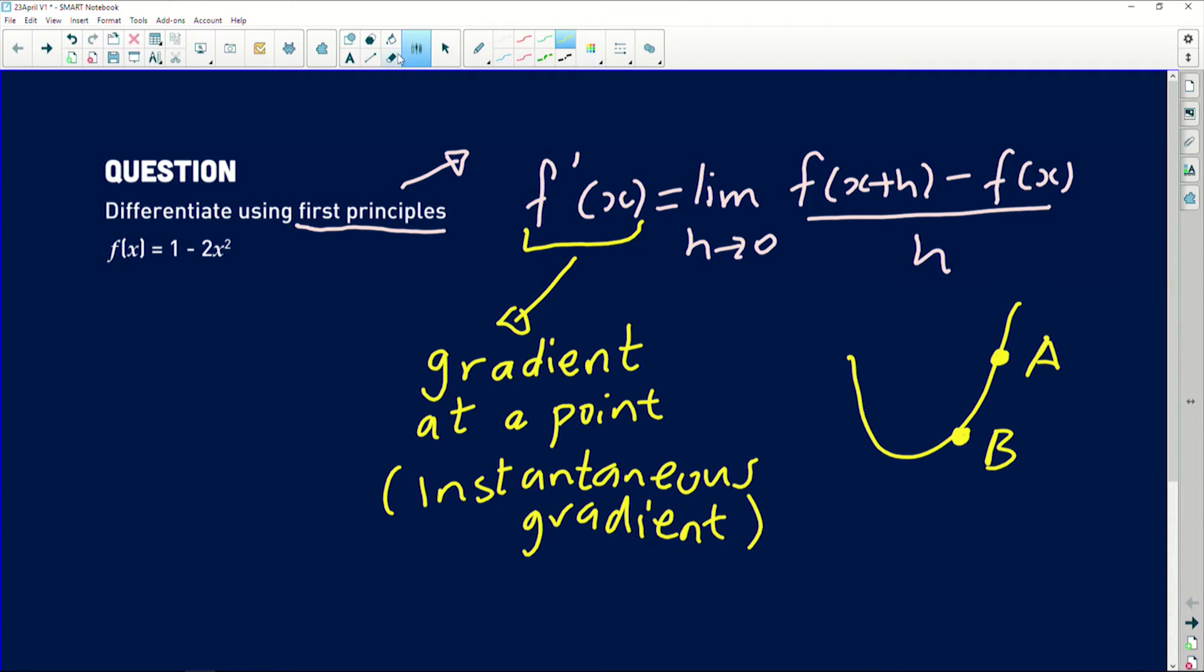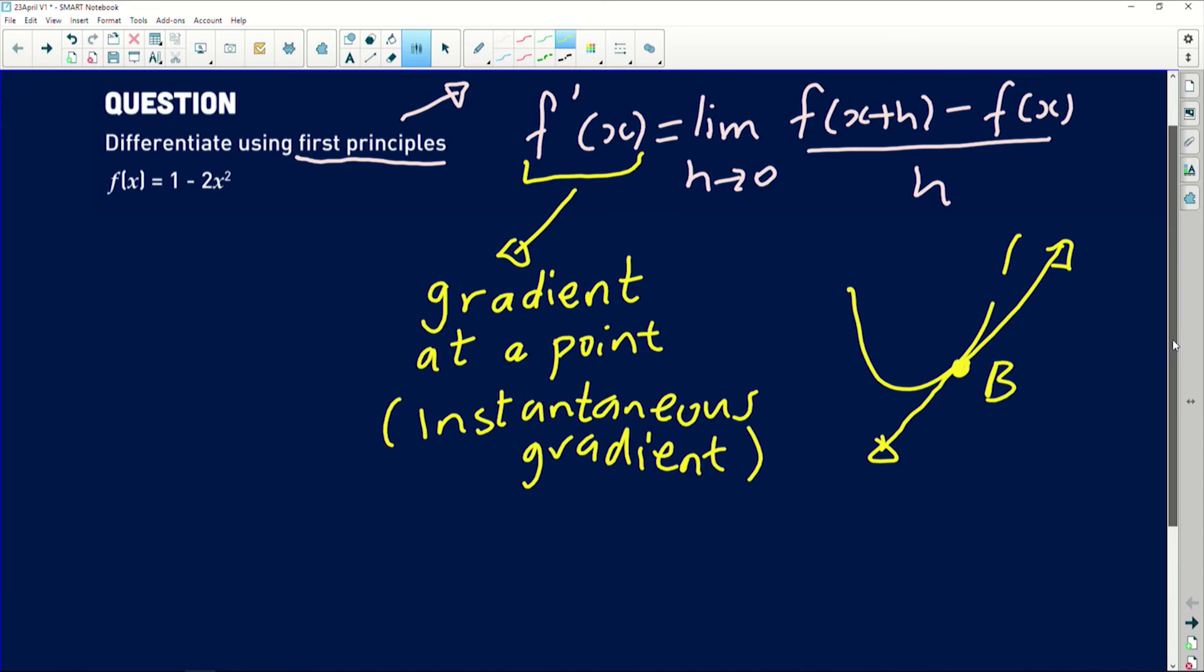But now in grade 12, when we use calculus, we use it to work out the gradient, not between two points, but at one point. So we kind of like remove the other point. And we expect you to work out the gradient of this particular graph at this point. Maybe if I had to draw a tangent there, what will be the gradient of this tangent? And that's what this thing is actually all about. So let's see what we can do in this particular question.